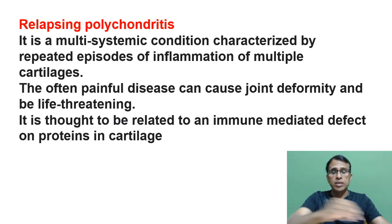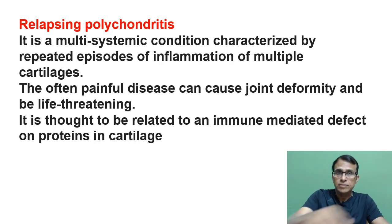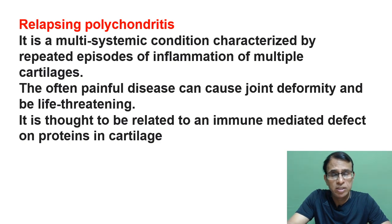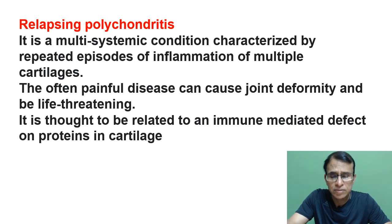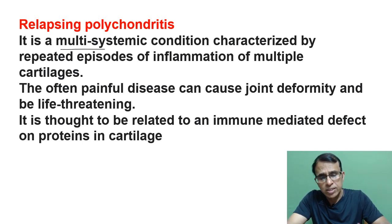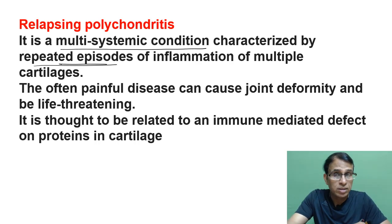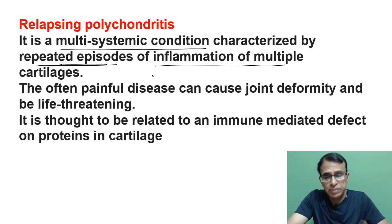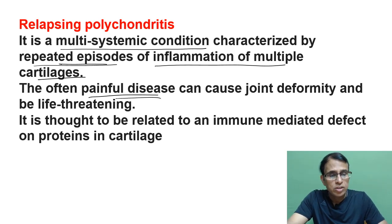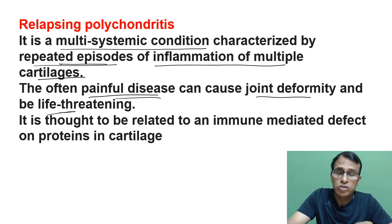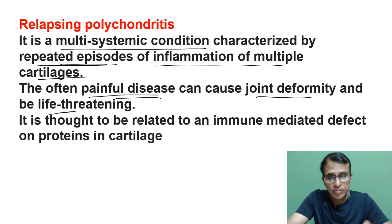Another condition is relapsing polychondritis. The name tells you: polychondritis means it affects many cartilages at the same time, and it comes back again and again — repeated attacks. It's a multi-systemic disease with repeated episodes of inflammation of multiple cartilages. It is often painful because cartilages are present in joints, causing joint deformities. It can be life-threatening if cartilages of the chest, heart, or lungs are involved.